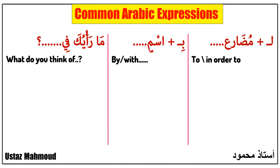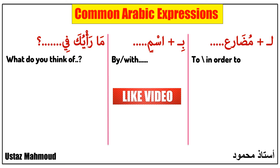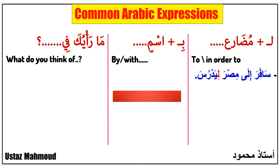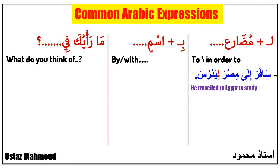Let's see more expressions. 'Li' followed by a present tense verb (mudari') means 'to' or 'in order to.' Let's see some phrases. 'Safara ila Misr li-yadrus' — it means 'he traveled to Egypt to study.' 'Safara ila' means 'he traveled to,' 'Misr' means 'Egypt,' 'li-yadrus' means 'to study.' As you see, 'li' is followed by the present tense 'yadrus.'